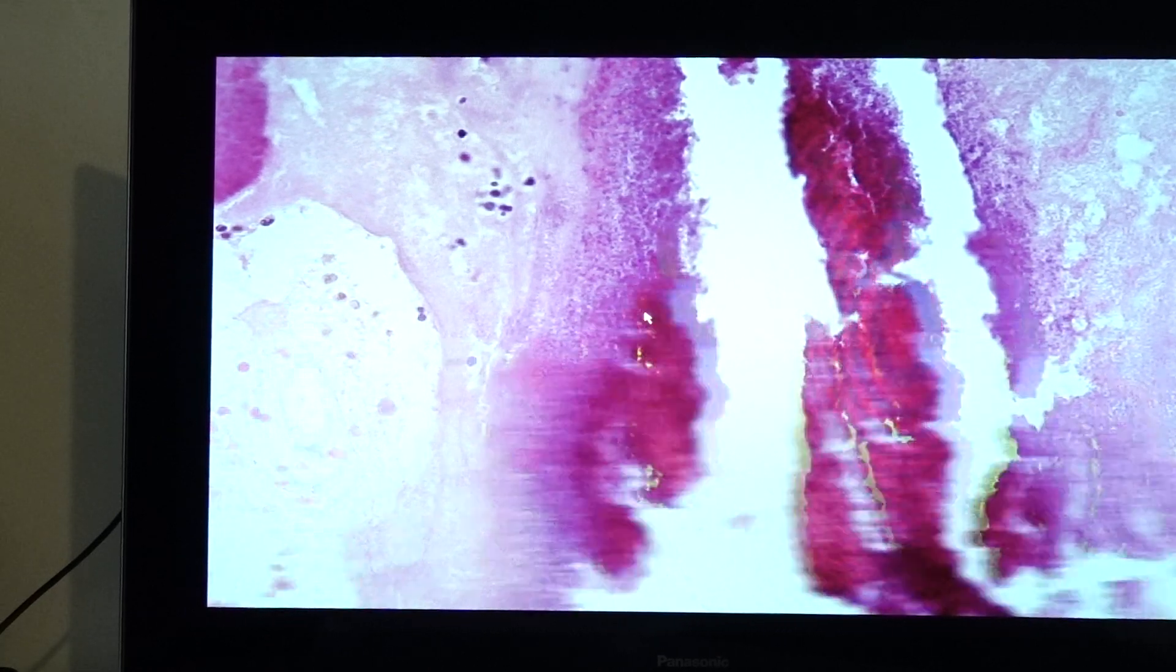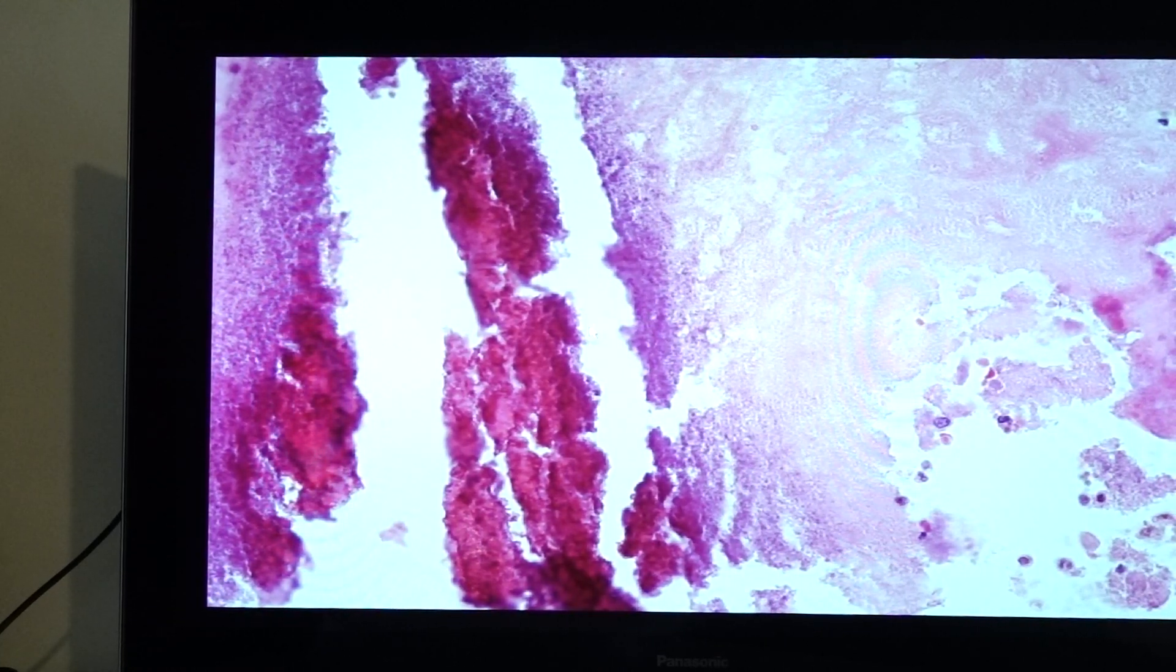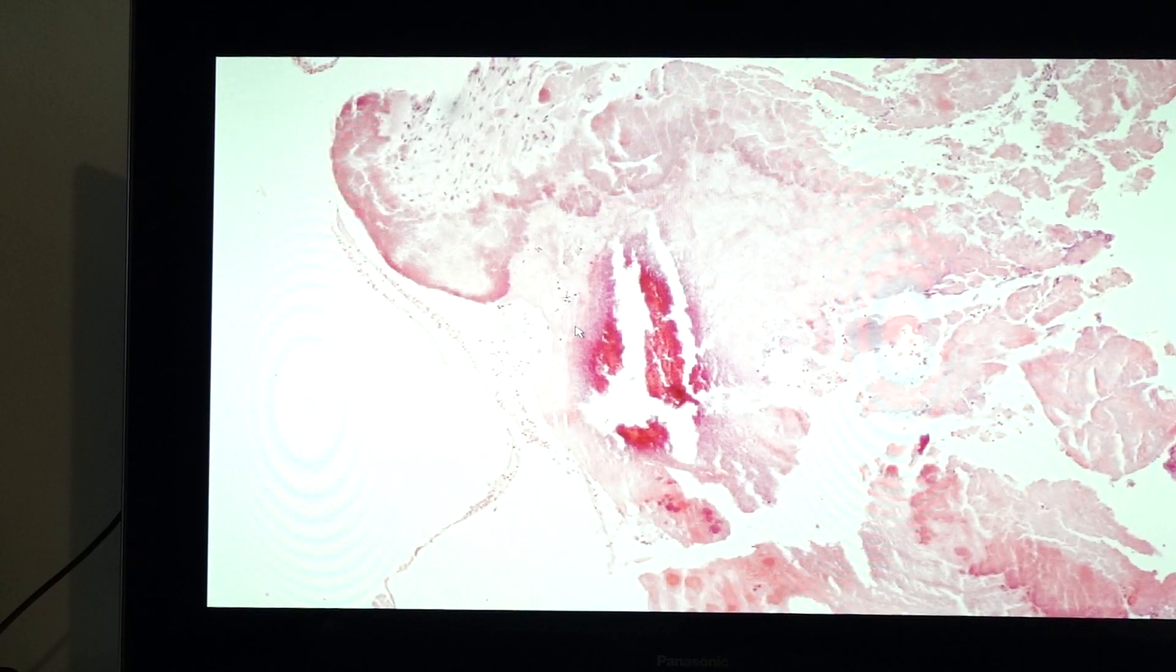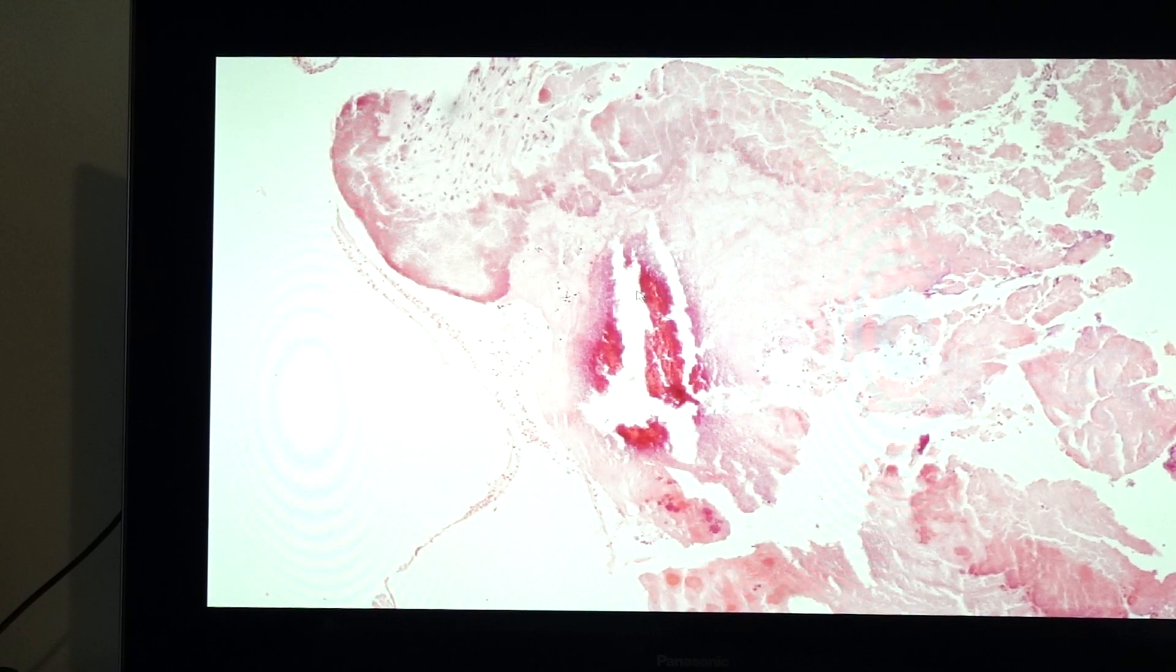The debris here would be composed of fibrin and presence of bacterial colonists. So this would be bacterial colonists there. So bacterial endocarditis, when you have here the thrombotic debris, this is the vegetation that we would see grossly. The vegetations present would be composed of the thrombotic debris or fibrin and bacterial colonies.